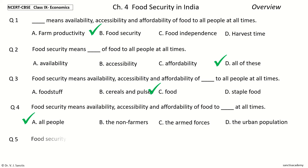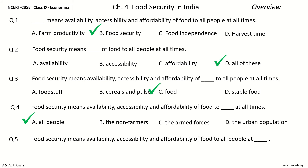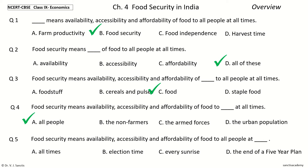Question 5: Food Security means Availability, Accessibility and Affordability of Food to all people at Dash. The options are All Times, Election Time, Every Sunrise, the End of a Five-Year Plan. Your time to choose. And the answer is All Times.